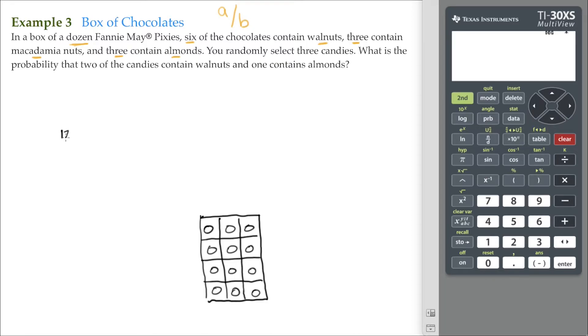For B, that's going to be 12 choose 3. That's our sample space. There's 12 choose 3 ways to select the candies.